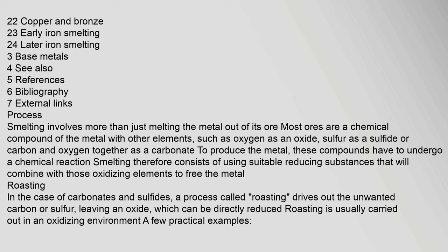These compounds have to undergo a chemical reaction. Smelting therefore consists of using suitable reducing substances that will combine with those oxidizing elements to free the metal. In the case of carbonates and sulfides, a process called roasting drives out the unwanted carbon or sulfur, leaving an oxide which can be directly reduced. Roasting is usually carried out in an oxidizing environment.